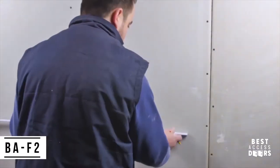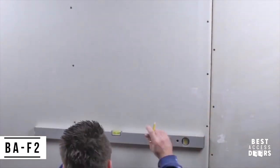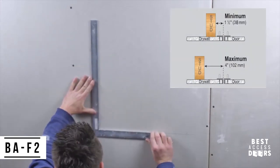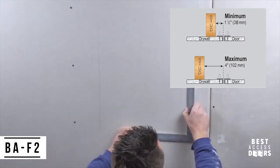Using a pencil, mark your location on the wall. Continue to draw your opening 3 eighths inches larger than the door size, while keeping a minimum clearance of one and a half inches from each surrounding stud.